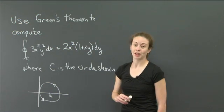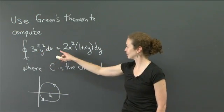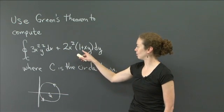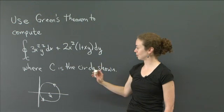So the integral, you can read it, but I will read it also for you. It's the integral of 3x²y² dx plus 2x²(1 + xy) dy. So you are supposed to use Green's theorem to compute that.